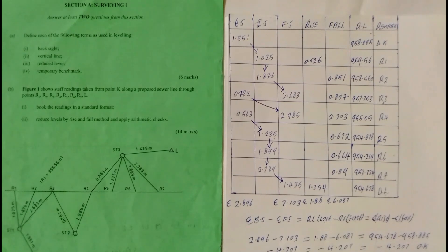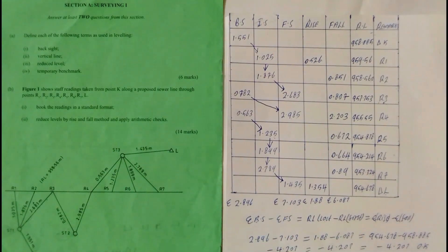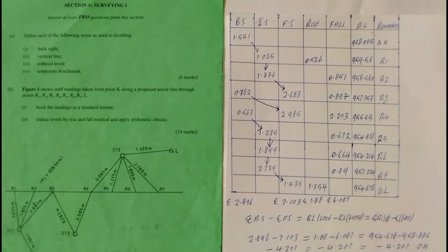So we have reduced the levels and the arithmetic check is okay. Join me for my next lesson where I will be solving a different question, or the same question using the height of collimation method. Thank you.